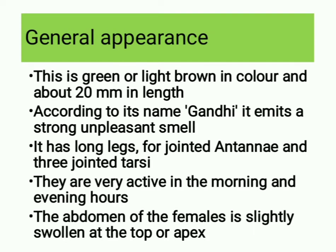General appearance: this pest is green or light brown in color and about 20 mm in length. According to its name 'Gandhi bug,' it emits a strong unpleasant smell. It has long legs, four-jointed antennae and three-jointed tarsi. They are very active in the morning and evening hours. The abdomen of the females is slightly swollen at the top or apex.